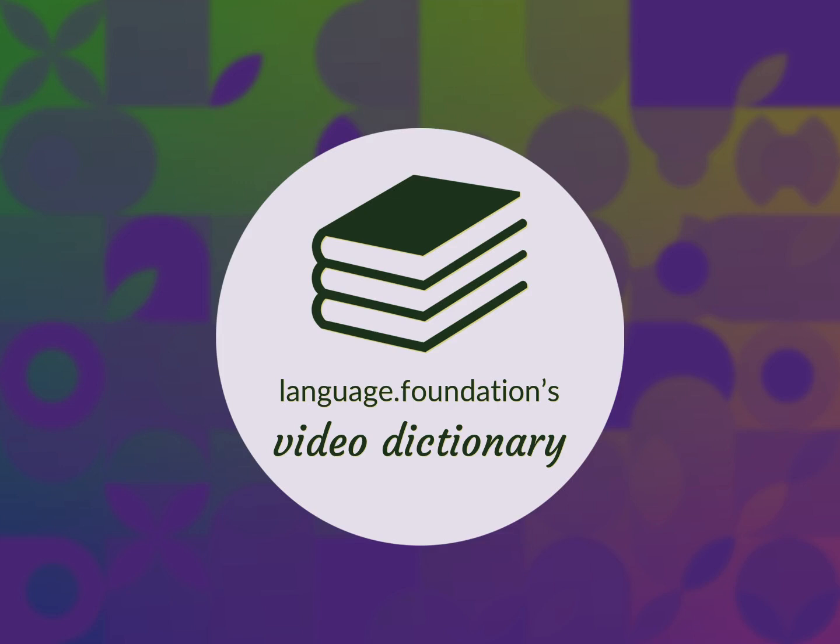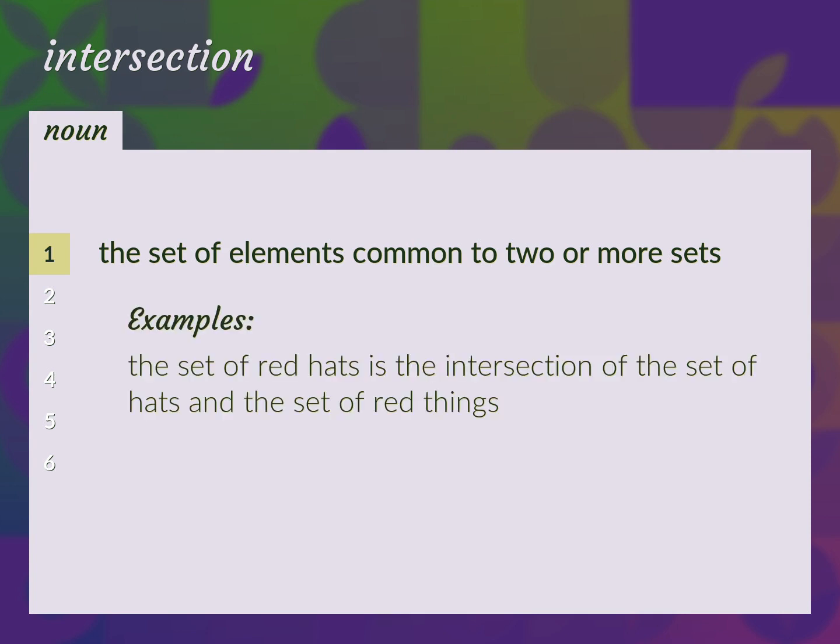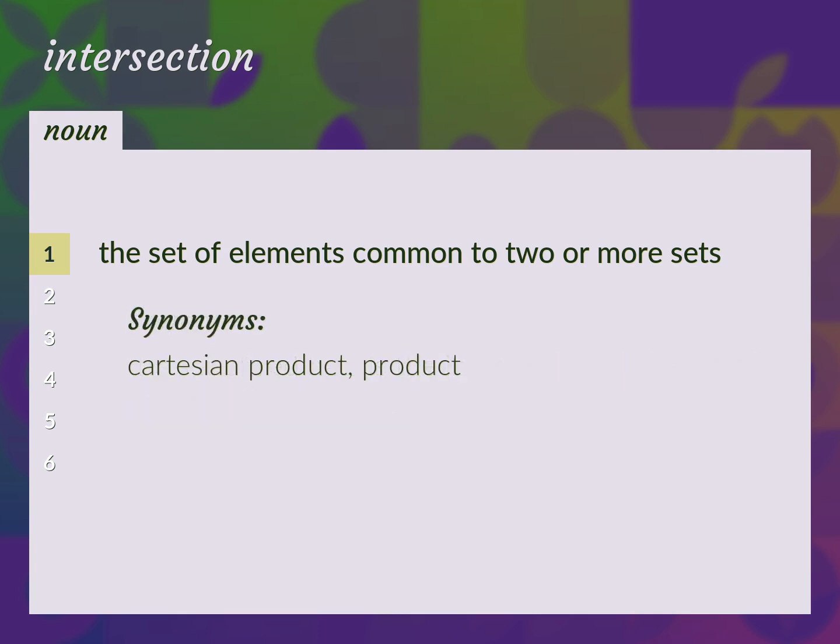Language.Foundation's Video Dictionary, helping you achieve understanding. The set of elements common to two or more sets. The set of red hats is the intersection of the set of hats and the set of red things. Cartesian product, product.